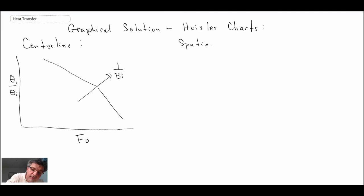Spatial distribution: you have to determine what goes on at the centerline first before you can get to this one, because you'll notice theta naught is in there and that's what you're getting. So this theta naught that you determine here goes there. That's what's going on. And this is as a function of one over the Biot number.